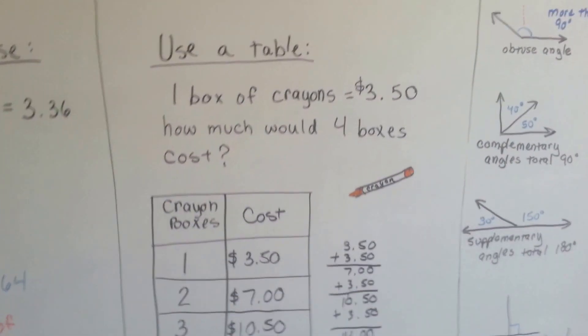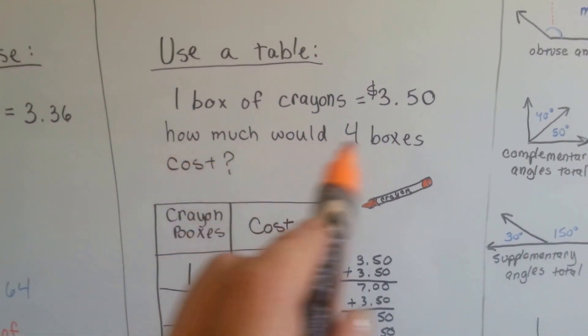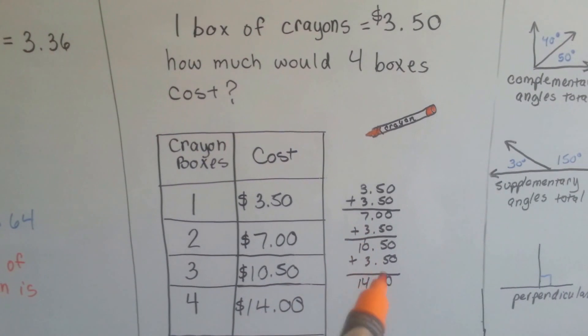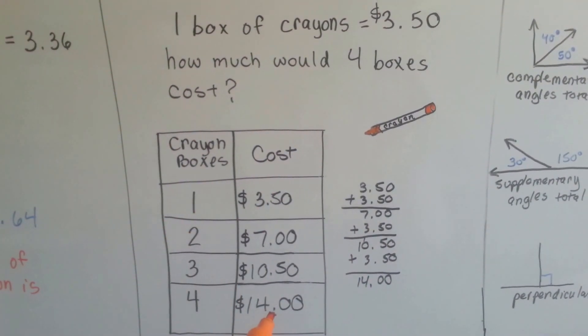We could also use a table. If a box of crayons was $3.50, how much would four boxes cost?